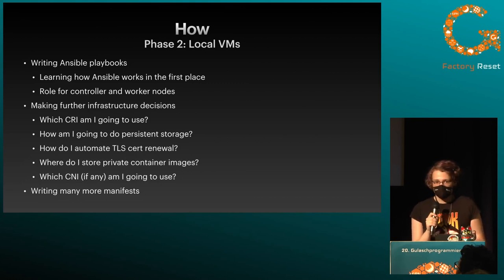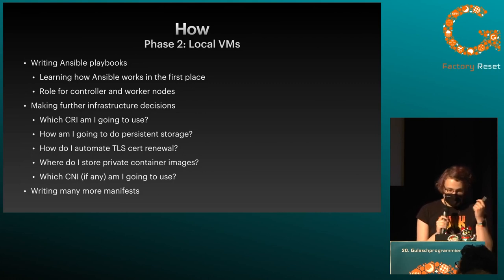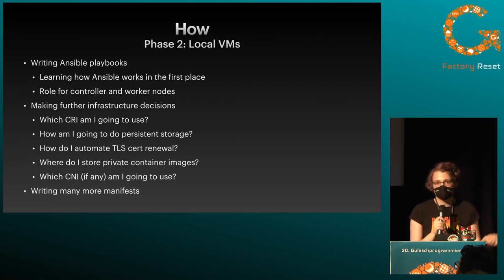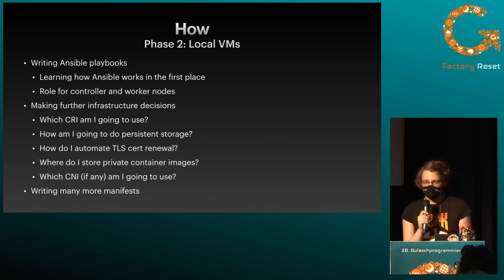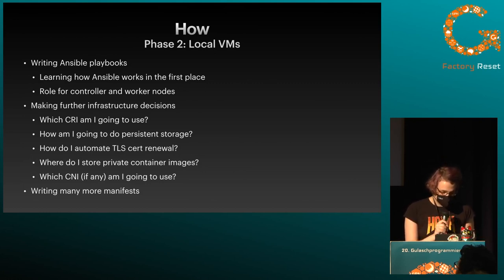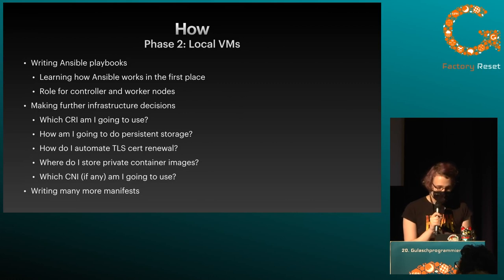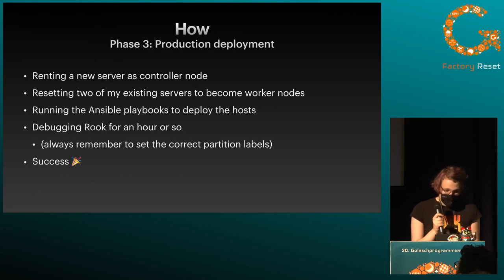How am I going to do persistent storage? Kubernetes is great for stateless applications — once you introduce state, it's a lot more difficult. How do I automate DNS cert renewal? I used Traefik for that before, and while Traefik is available for Kubernetes, the community edition is not very good in my opinion. Also, how am I going to do networking between my nodes — the container network interface? And I wrote a lot more manifests. I already had my old infrastructure in Docker Compose and I basically just translated those deployments manually to Kubernetes manifests. There's a tool that can automate that, but I didn't want to use it.